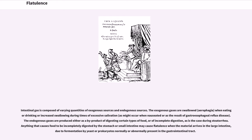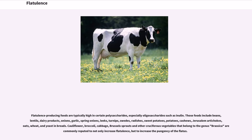Gas incontinence is a recognized subtype of fecal incontinence and is usually related to minor disruptions of the continence mechanisms. Some consider gas incontinence to be the first, sometimes only, symptom of fecal incontinence. Intestinal gas is composed of varying quantities of exogenous and endogenous sources. The exogenous gases are swallowed — aerophagia — when eating or drinking, or increased swallowing during times of excessive salivation, as might occur when nauseated or as the result of gastroesophageal reflux disease.